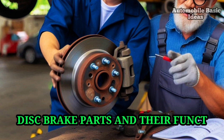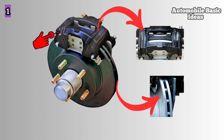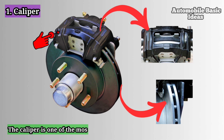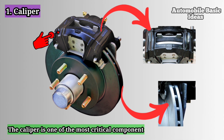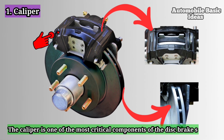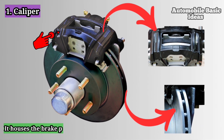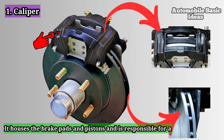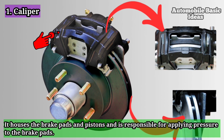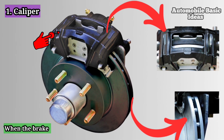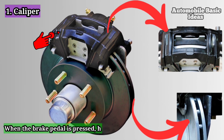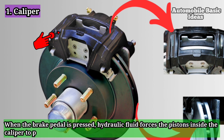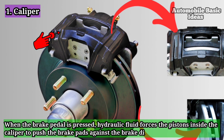Disc brake parts and their functions. One: caliper. The caliper is one of the most critical components of the disc brake system. It houses the brake pads and pistons and is responsible for applying pressure to the brake pads when the brake pedal is pressed. Hydraulic fluid forces the pistons inside the caliper to push the brake pads against the brake disc or rotor.